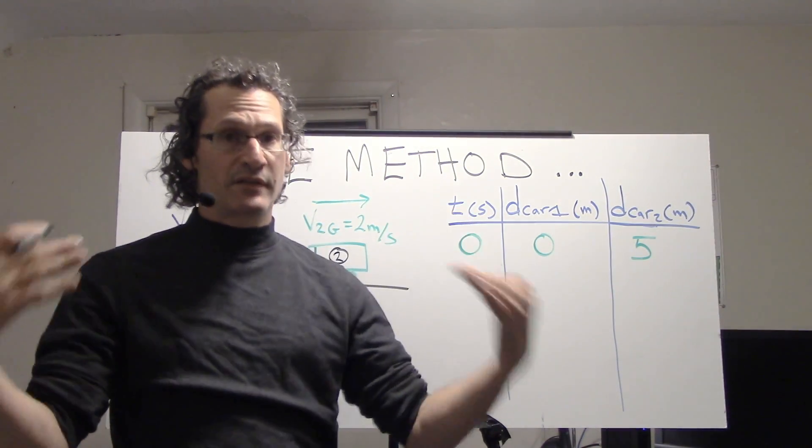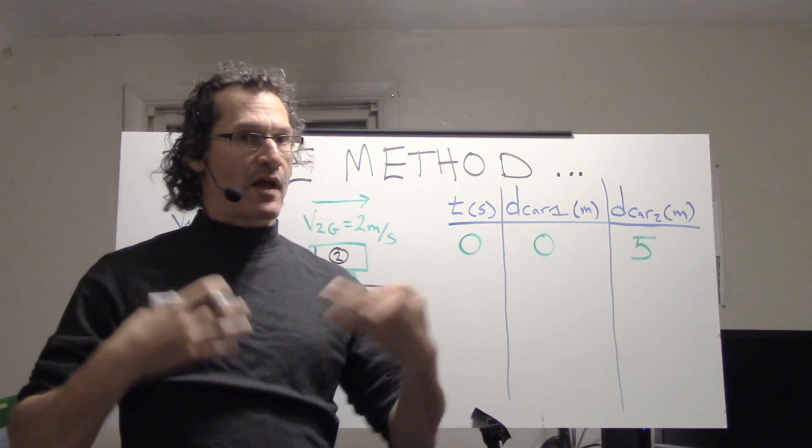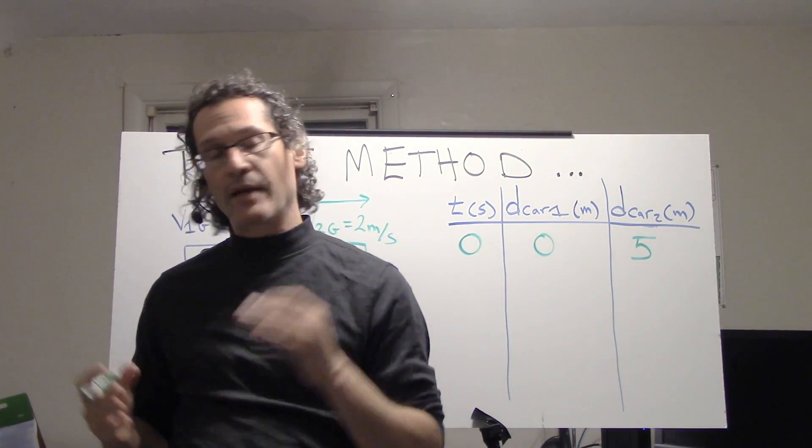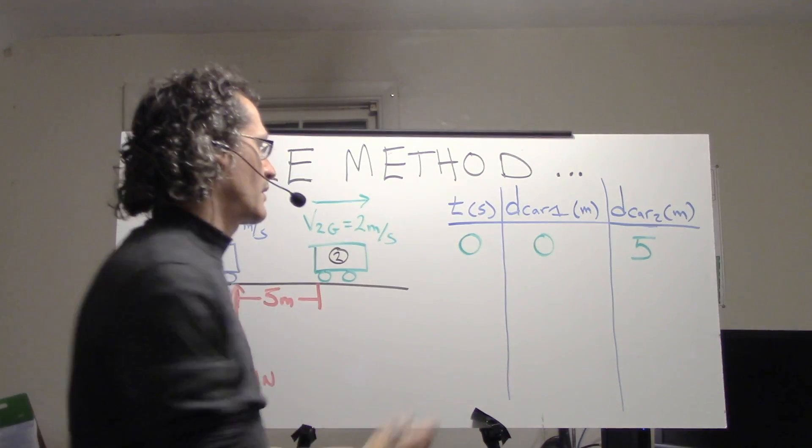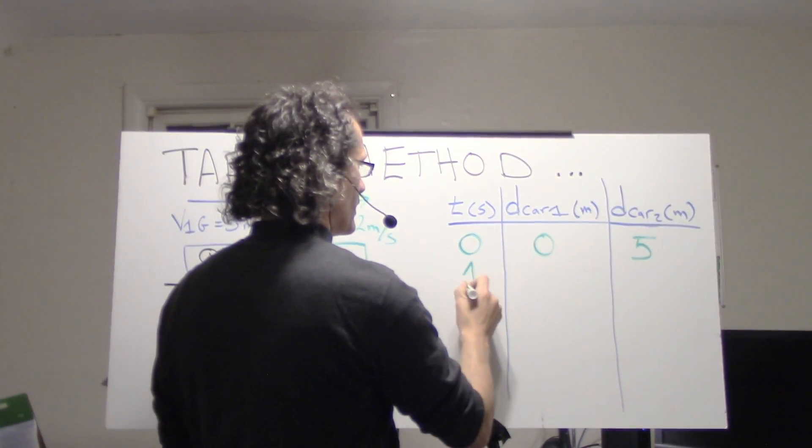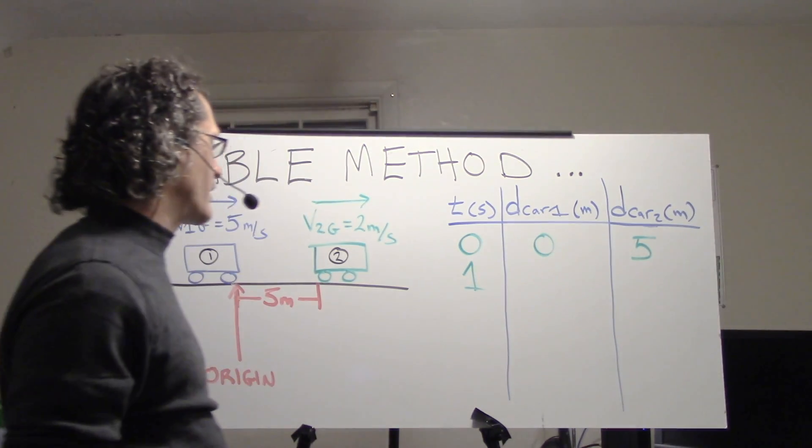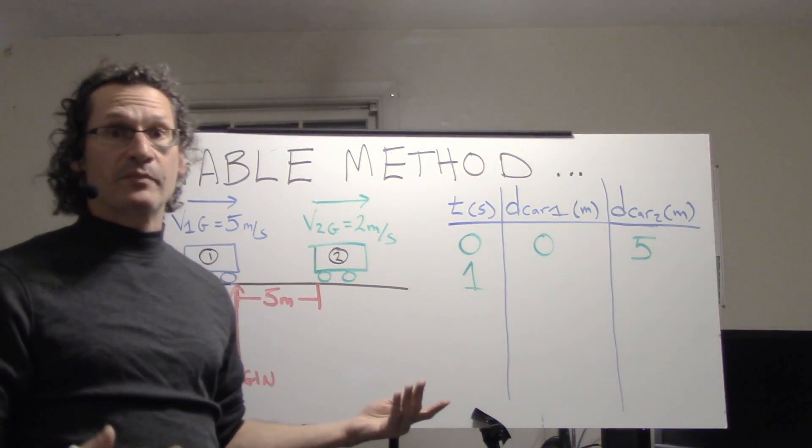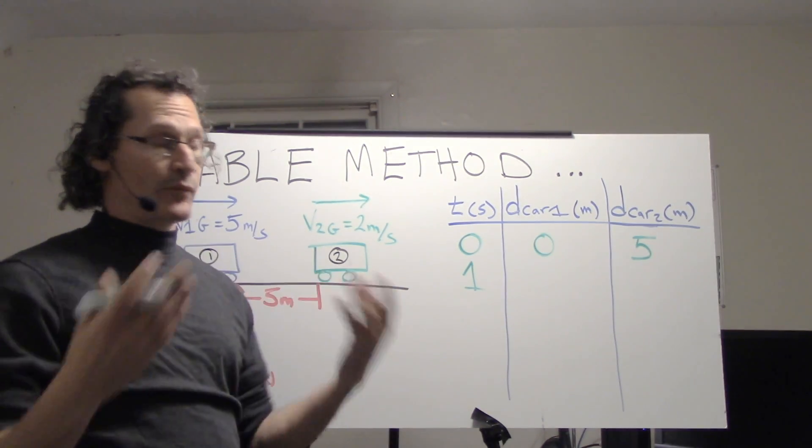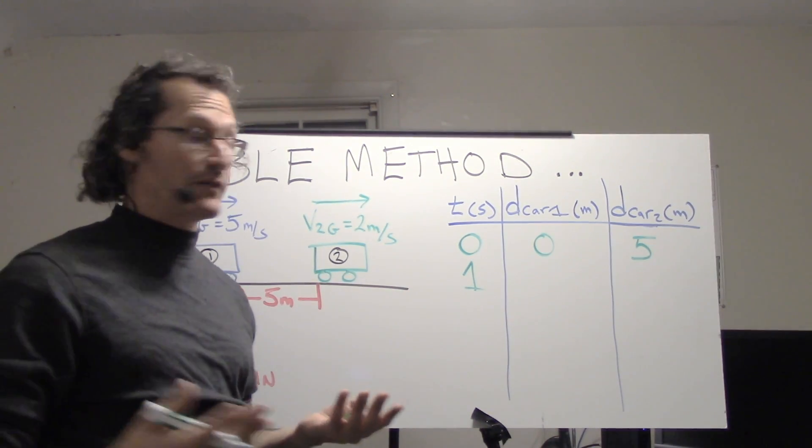All right, so let's go to t equals one second. Car one will have gone how far? Well, it moves at five meters per second. One second goes by, it will move to a location of five meters.